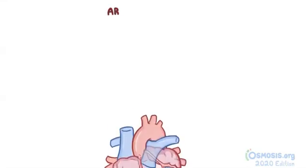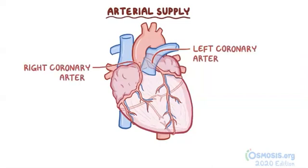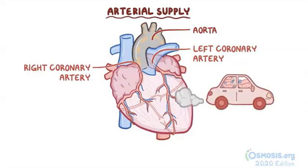The coronary circulation system is mainly made up of arteries and veins. The arterial supply of the heart starts with the branching out of the left and right coronary arteries from the base of the aorta — like a superhighway that carries oxygenated blood from the heart to the rest of the body.